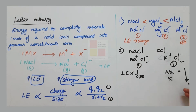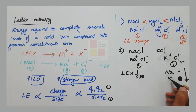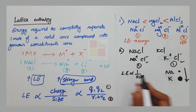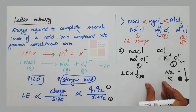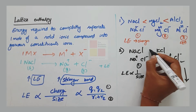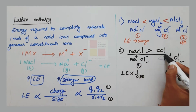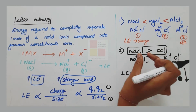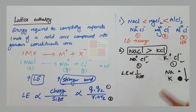Potassium's size is more than sodium's. Since lattice enthalpy is inversely proportional to size, the smaller sodium ion means NaCl has a higher lattice enthalpy. Therefore, NaCl has a stronger ionic bond than KCl.